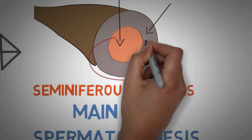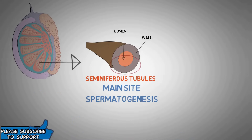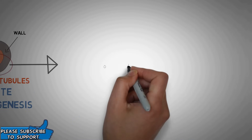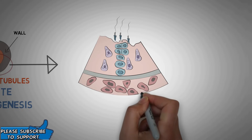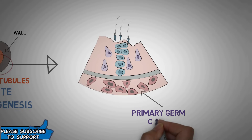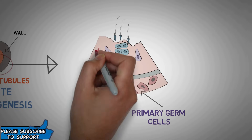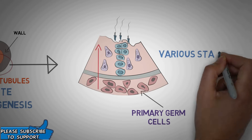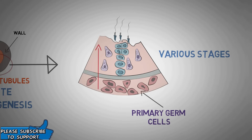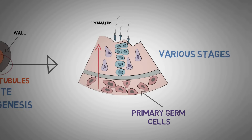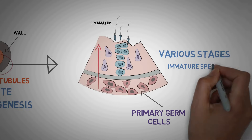Now let's look at a closer view of the cross-section of the wall of the seminiferous tubule. The wall contains numerous types of cells, and one of them are the primary germ cells. The primary germ cells transform through various stages of development and finally form immature sperms known as spermatids.